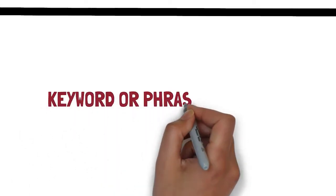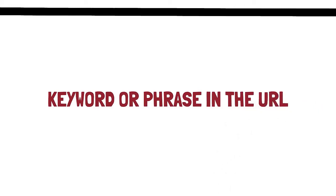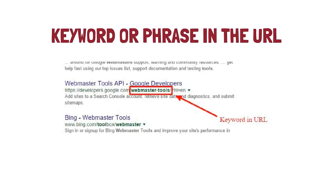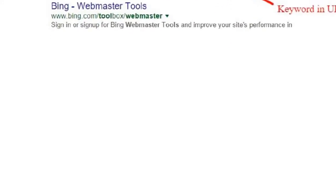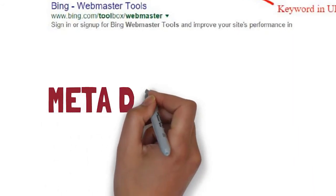Second, keyword or phrase in the URL. As much as possible, you want your URL to contain the keyword or phrase you are trying to rank. Well, if the keyword is already in your article title, it will automatically be in the URL.